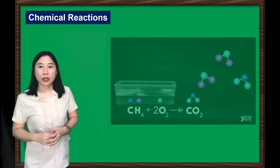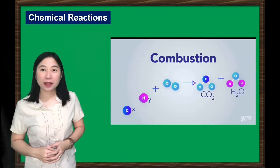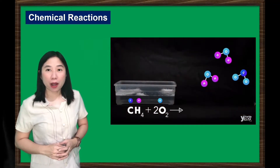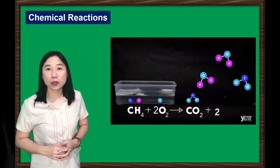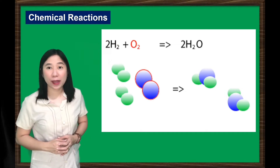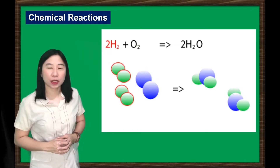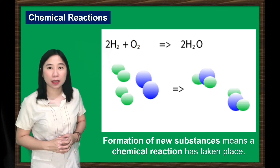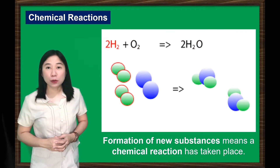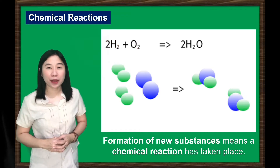You have learned that substances undergo chemical bonding, which results in the breaking of bonds and formation of new bonds. In this way, new substances are formed. In this example, the reactants hydrogen and oxygen reacted with one another to form new substances, which are molecules of water. Formation of new substances means a chemical reaction has taken place.